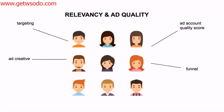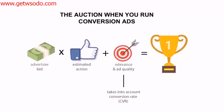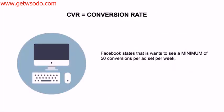Facebook officially states that they want to see a minimum of 50 conversions per ad set per week. So if you're optimizing your ad set for purchase, you should be getting at least 50 of those conversions per ad set per week — assuming you have your conversion window set to seven days, which is the default. A lot of you are not going to be getting 50 purchases per ad set per week, maybe on the whole pixel you might be, but probably not per ad set.